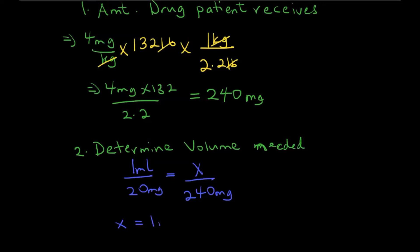So x would be equal to 1 ml times 240 divided by 20 mg, and that should give you 12 ml. So that's how you solve it, really easy.